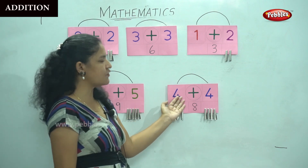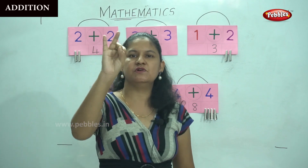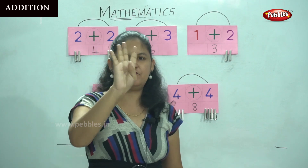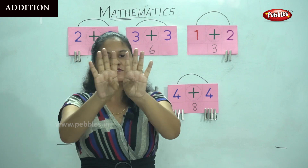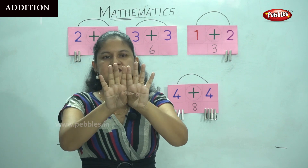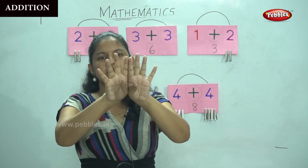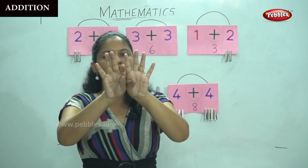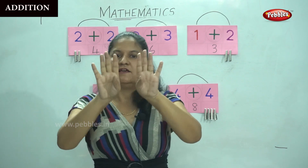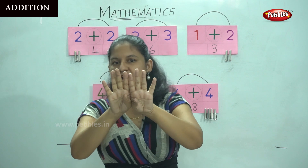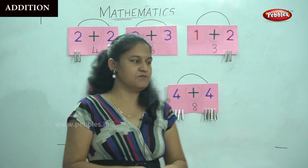The next is four plus four. I have one, two, three, four and one, two, three, four fingers up. Adding all fingers: one, two, three, four, five, six, seven, eight — that gives me the answer eight. So four plus four is nothing but eight.